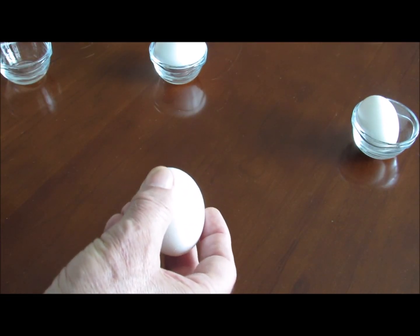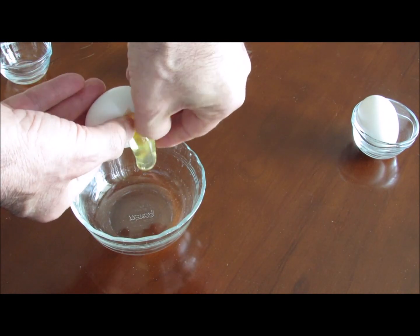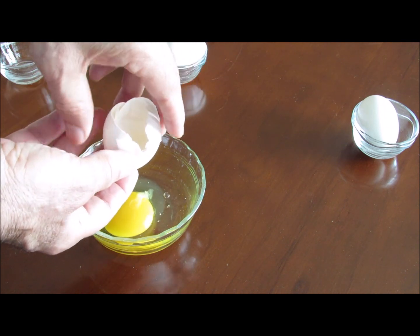Now we crack the first egg, which is a raw egg. This is the reason why it did not spin very well.